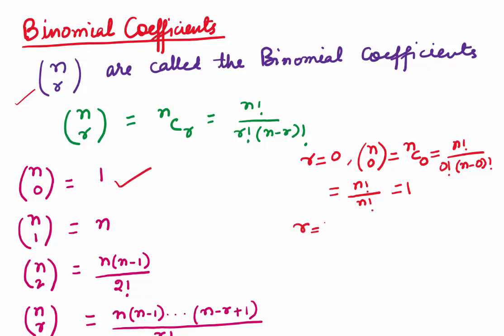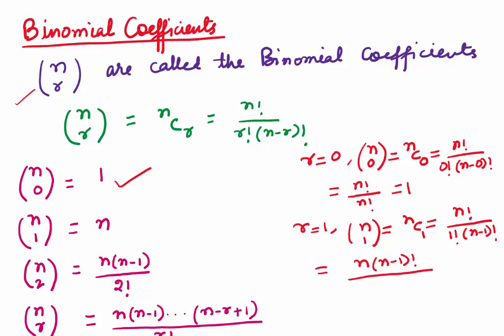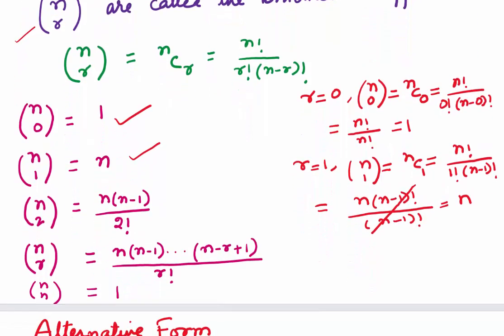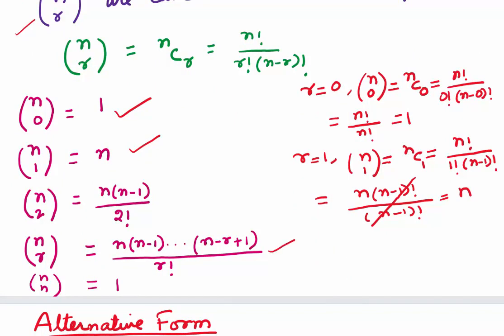Let's take r equals 1, meaning we are finding n1. n1 would mean nC1. Using the formula, this would be n factorial upon 1 factorial times n minus 1 factorial. Write the numerator as n times n minus 1 factorial. 1 factorial is 1, so n minus 1 factorials cancel and we're left with n. So n1 equals n. By giving different values to r, you can find all the binomial coefficients. The general term nr is n times n minus 1 up to n minus r plus 1, upon r factorial, and nn equals 1.